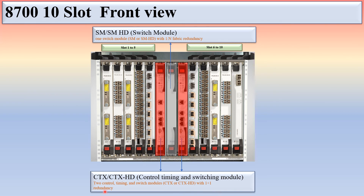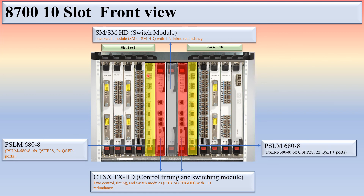The difference between SM/SMHD and CTX/CTSHD is only in capacity. In slots 5 and 6, there is a PSLM 680-8 — this is the packet service line module with a faceplate capacity of 680G and 8 ports on the faceplate.